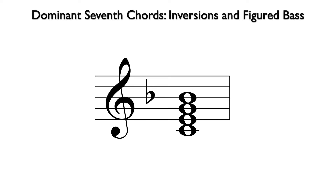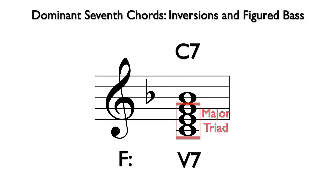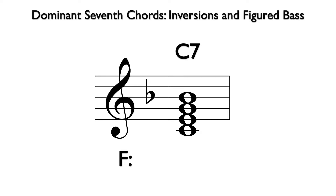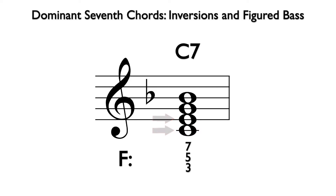Here we have a root position C7 chord, the V7 in the key of F major. This is a major triad with an added minor seventh interval above the root. This chord is in root position because the lowest note is the root of the chord. Figure-based symbols indicate the intervals above the lowest note of the chord. From C to Bb is the seventh, C to G is a fifth, and C to E is a third. Therefore the longhand figure-based symbol for this chord is 7-5-3, typically abbreviated to just 7.